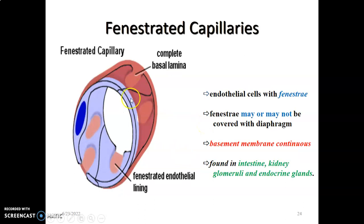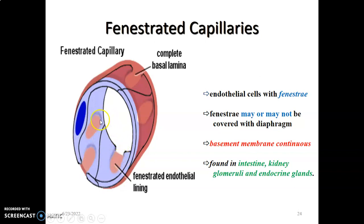Moving to fenestrated capillaries — looking at this image, you can see fenestrations in the endothelial lining, while the basal lamina shown in pink remains continuous. The basal lamina in fenestrated capillaries is still complete like a continuous capillary, but the difference is in the endothelium: it is fenestrated. These fenestrae may have diaphragms covering them or may lack diaphragm coverings, but the basement membrane is continuous.